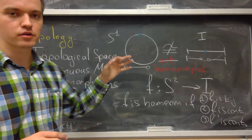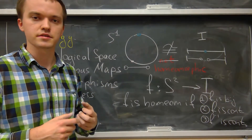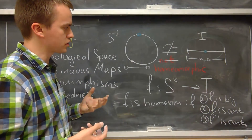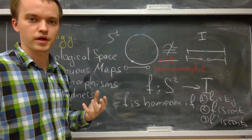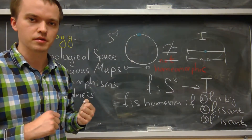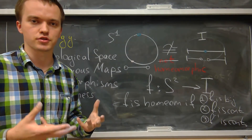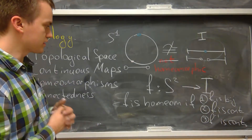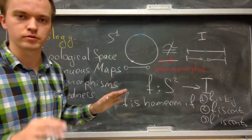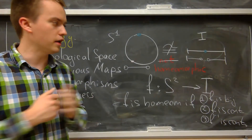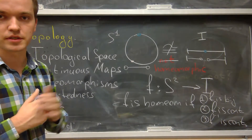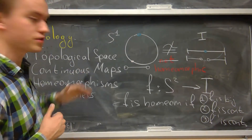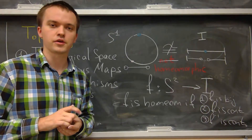These are the basic tools that allow us to distinguish two spaces. For more complex spaces we study algebraic topology, where we use algebraic structures such as fundamental groups, homology, and cohomology groups. That was a small introduction to topology — thank you for watching, please subscribe, and let me know if you want me to continue this series.